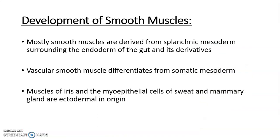Smooth muscles are mostly derived from splanchnic mesoderm surrounding the endoderm or endothelia of the gut and its derivatives. Vascular smooth muscles differentiate from somatic mesoderm. All smooth muscles are mesodermal in origin except the muscles of the iris — sphincter pupillae and dilator pupillae — and the myoepithelial cells of sweat and mammary glands, which are ectodermal in origin.